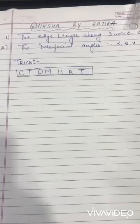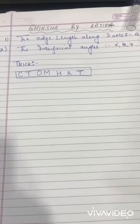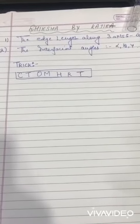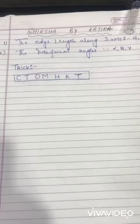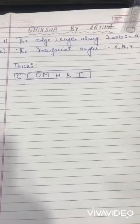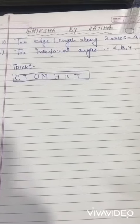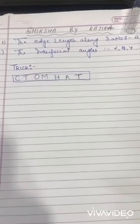The smallest part which can be repeated in all directions to generate the entire crystal lattice is called unit cell. The edge length along three axes are a, b, and c, and the interfacial angles are alpha, beta, and gamma. So what is primitive unit cell?